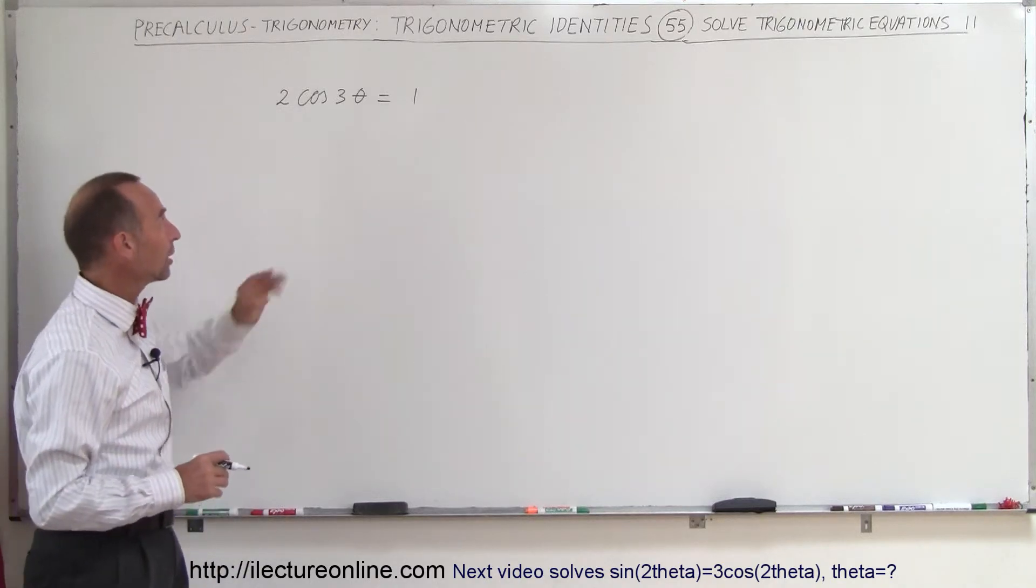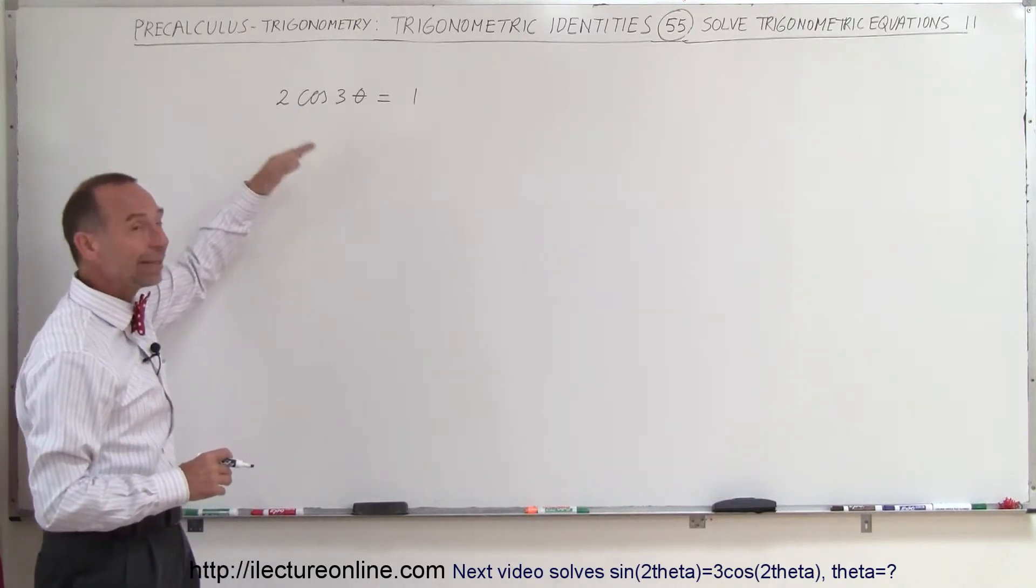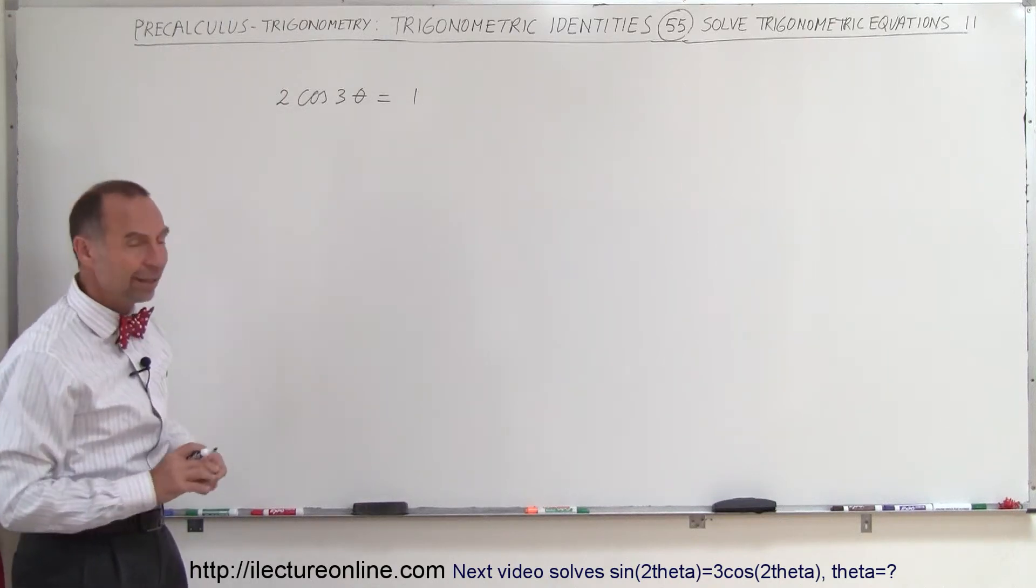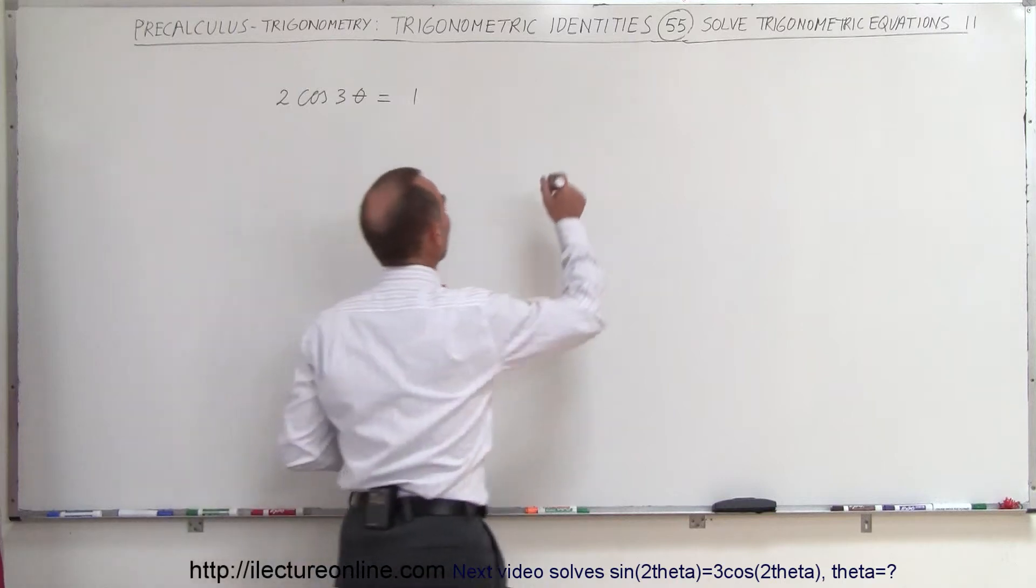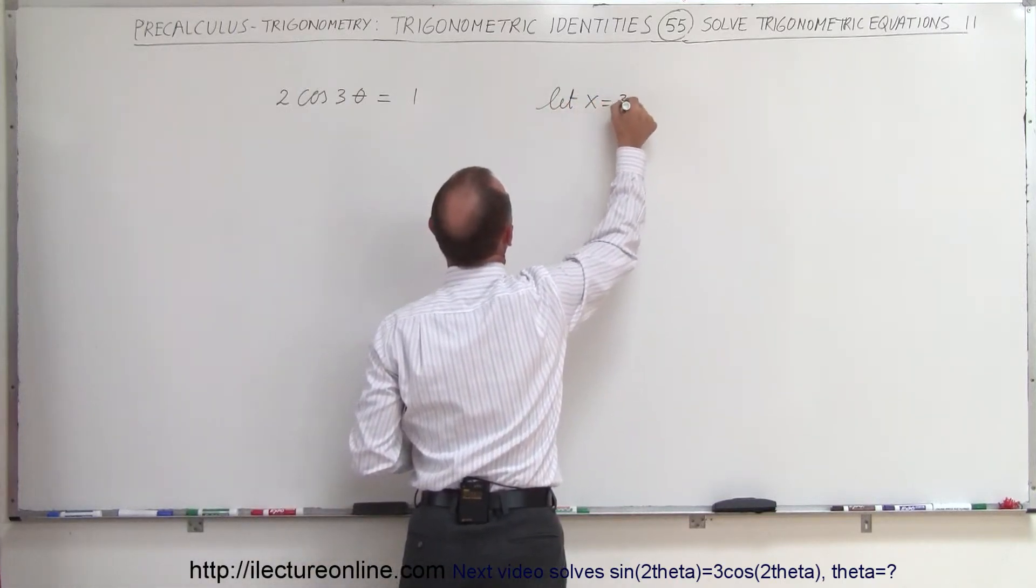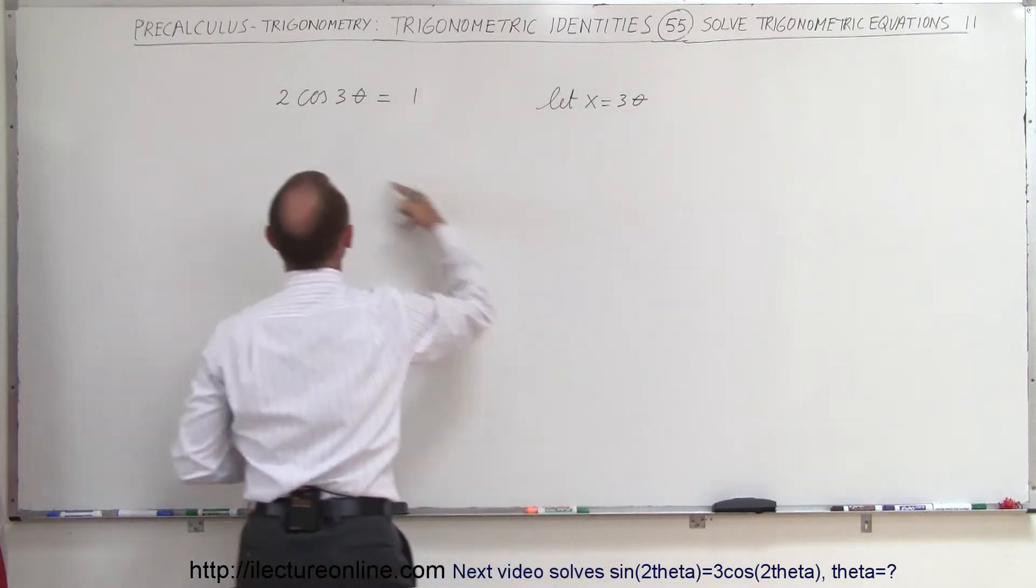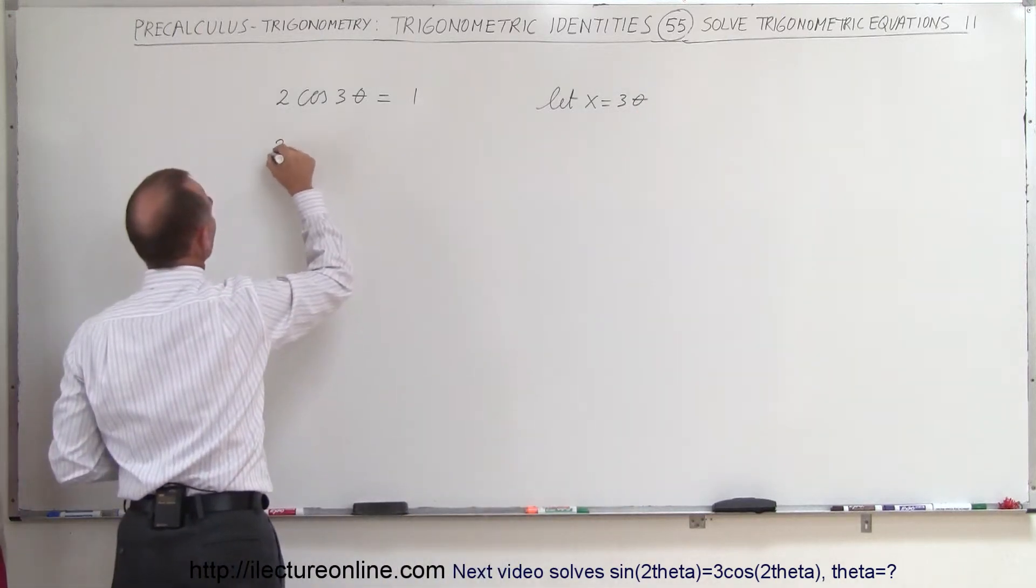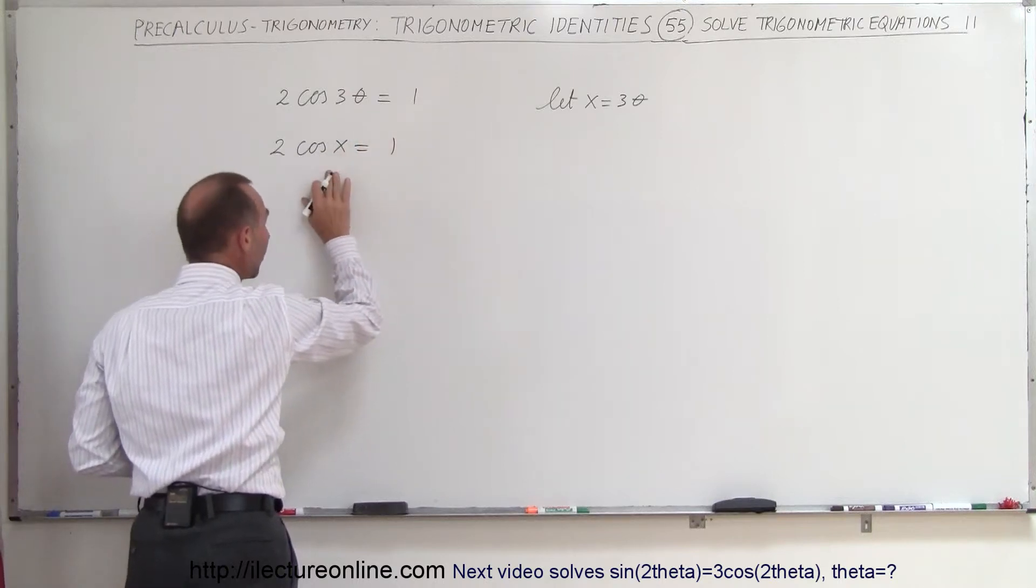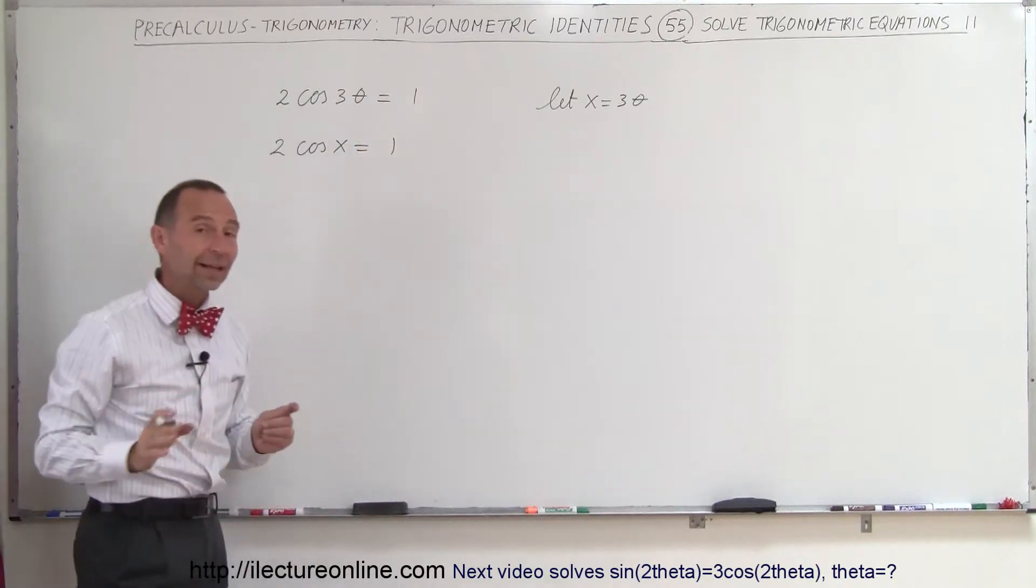We have another technique to employ here because we're not multiplying or adding with anything else. It's just one trigonometric function, the cosine of 3 theta. What we can do is substitute. Let x equal 3 theta and then substitute that in here. Now this equation looks like 2 times the cosine of x equals 1.